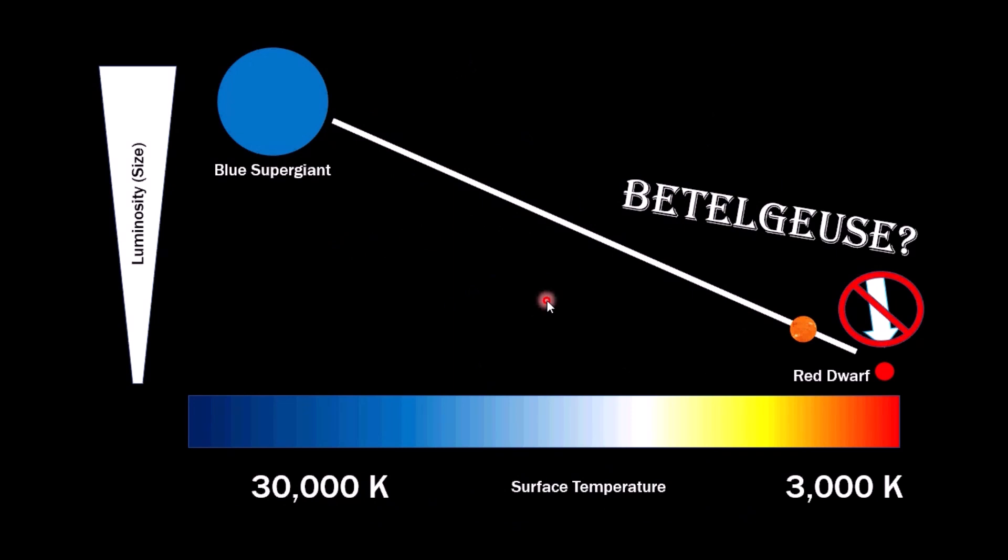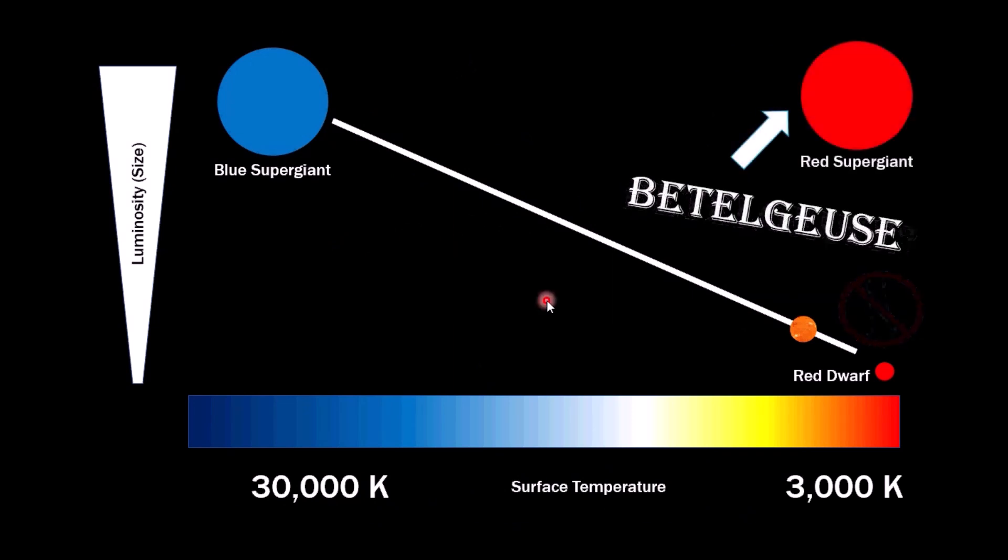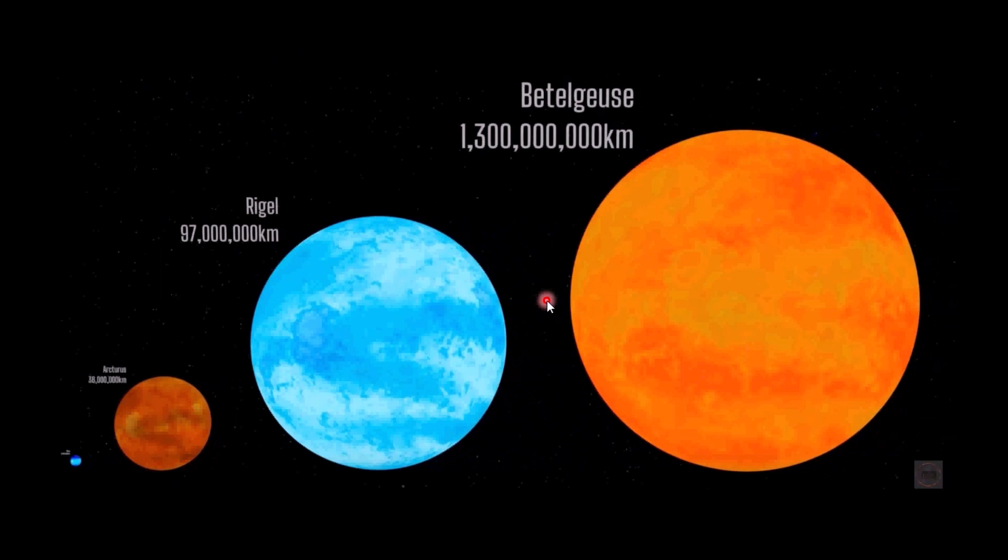Well, no. Betelgeuse is actually not a red dwarf. Betelgeuse is one of the largest stars we know of. A red supergiant star. There is Betelgeuse compared to Rigel. It's bigger. It's bigger than the blue supergiant. Betelgeuse is huge.